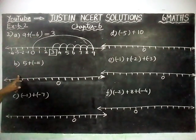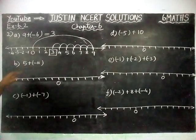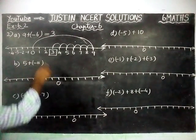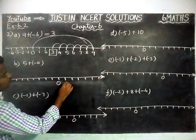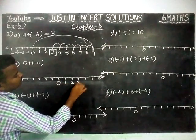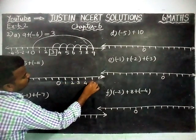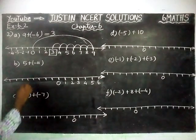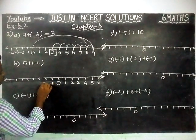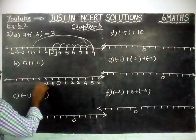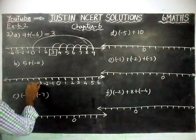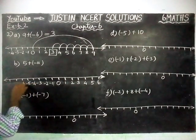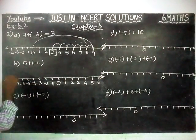Now we are going to solve part B: 5 plus minus 11. From 0, right-hand side positive numbers: 1, 2, 3, 4, 5, 6. Left-hand side, negative numbers up to minus 8: minus 1, minus 2, minus 3, minus 4, minus 5, minus 6, minus 7, minus 8.